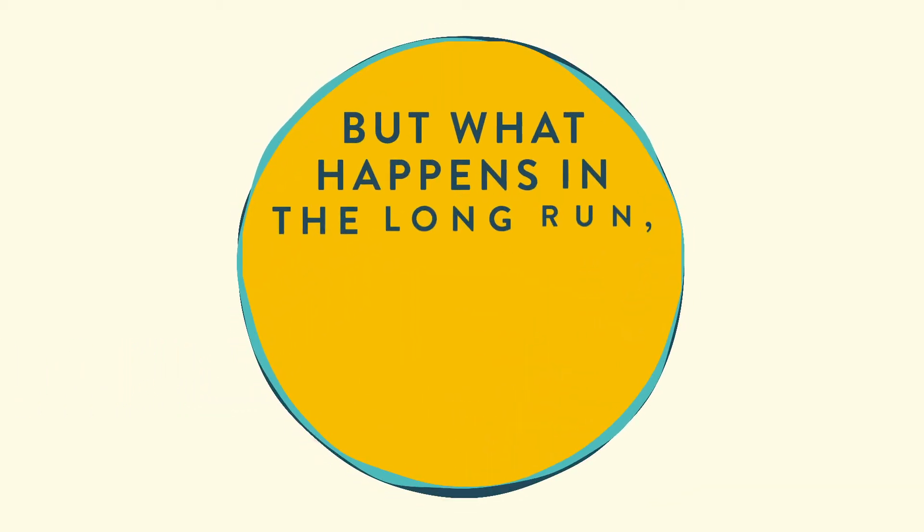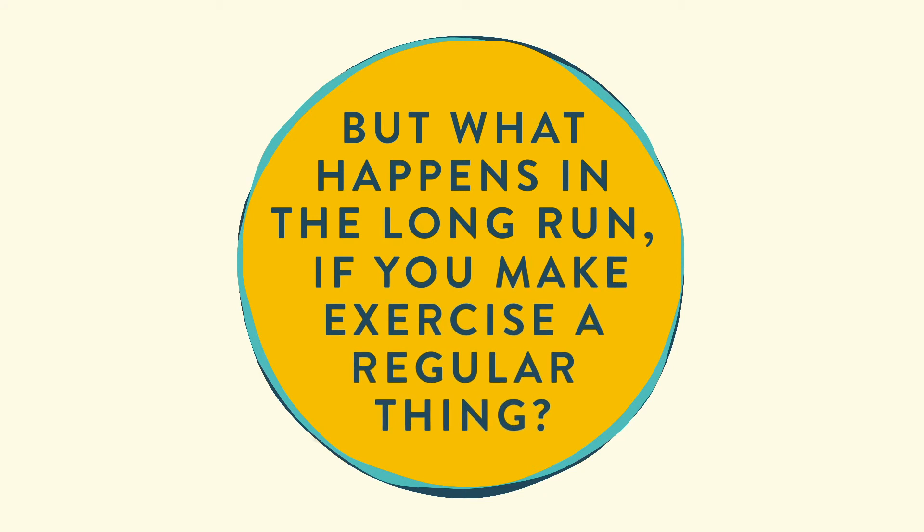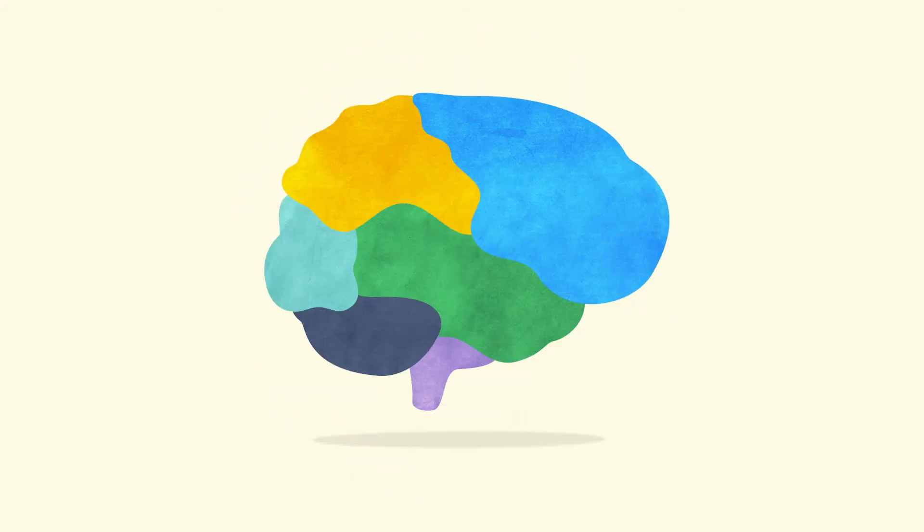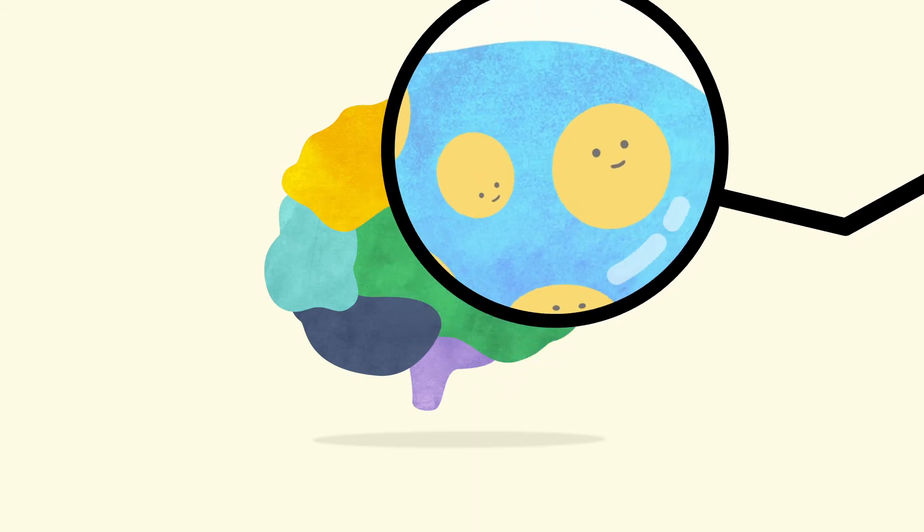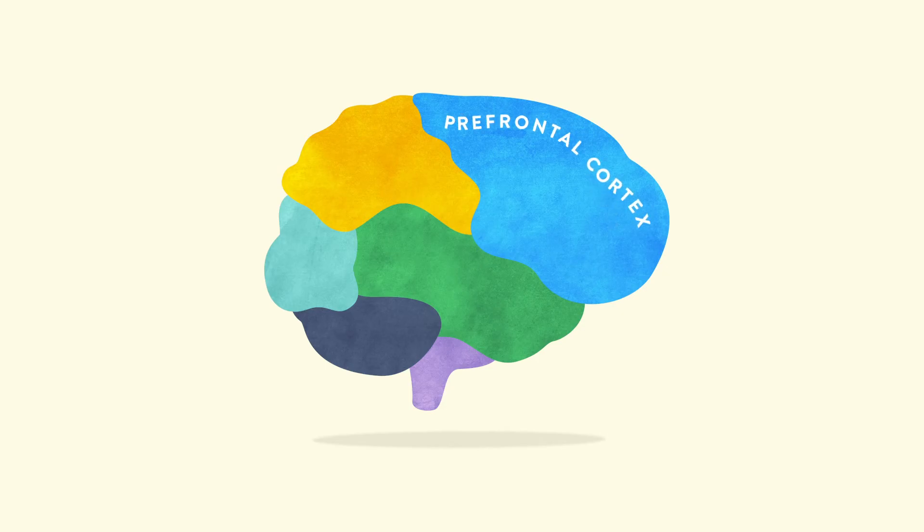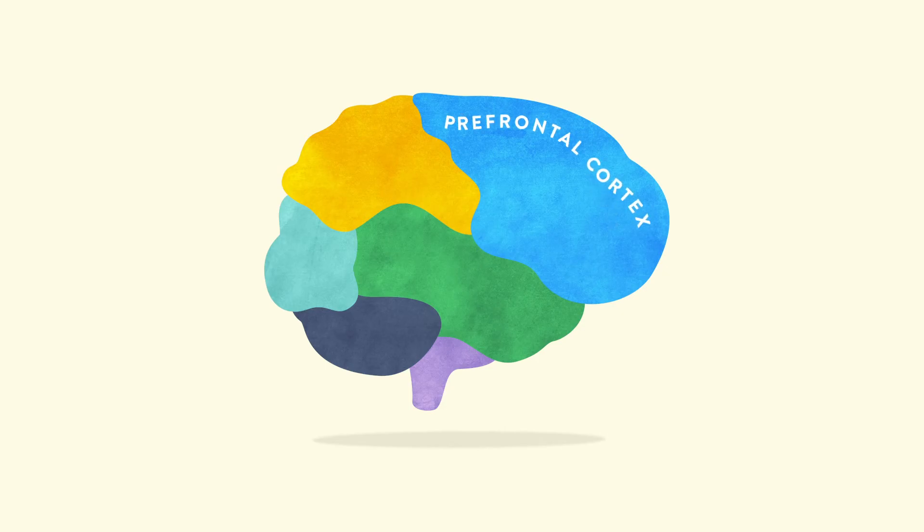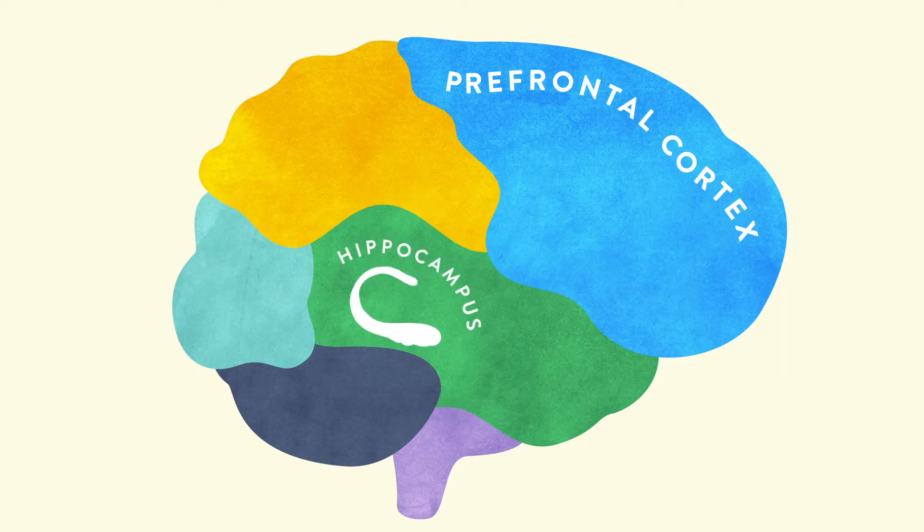But what happens in the long run if you make exercise a regular thing? Moving your body a few times a week means new brain cells are born inside your head, both in the prefrontal cortex and in this other neat brain area called the hippocampus.